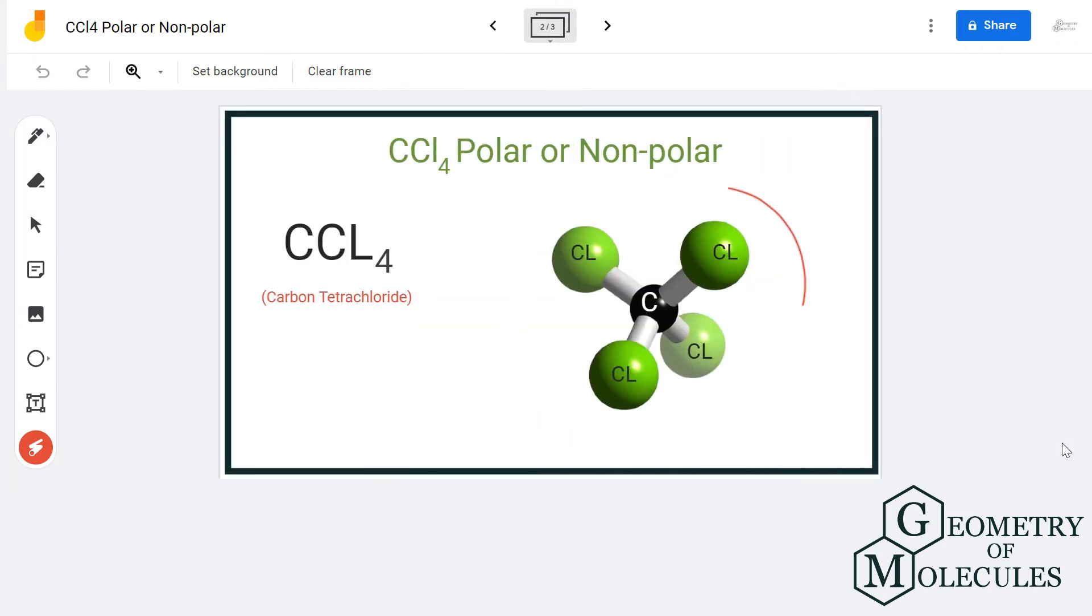Here, this is the central carbon atom and these all are chlorine atoms. As you can see, the arrangement of chlorine atoms is quite symmetric. So even if there are dipole moments, they will get cancelled out due to this symmetric arrangement.